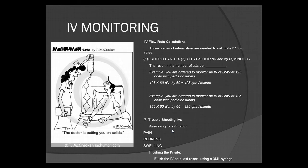IV flow rate calculations: in order to perform a calculation, you need three pieces of information — the ordered rate, the drop factor of the tubing, and the minutes over which the medication will be administered. The result will be the number of drops per minute. Example: you are ordered to monitor an IV of D5W at 125 cc's per hour with pediatric tubing. So you have 125 cc's times 60 drops divided by one hour, converted to 60 minutes, giving you a total of 125 drops per minute. That will be the flow rate at which you set the IV.